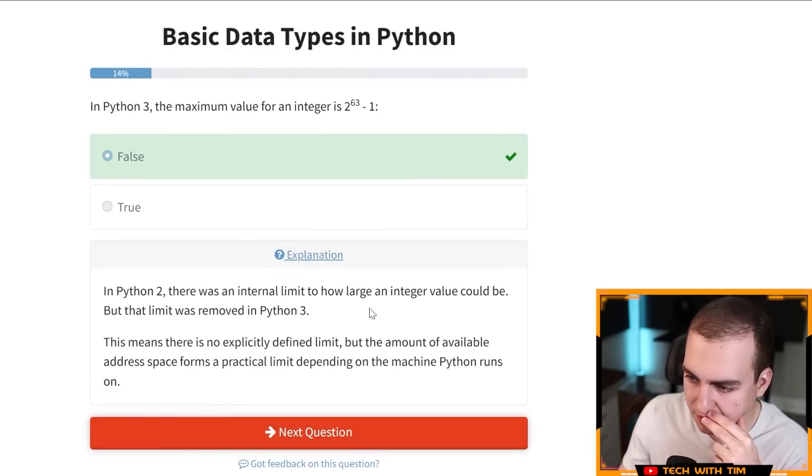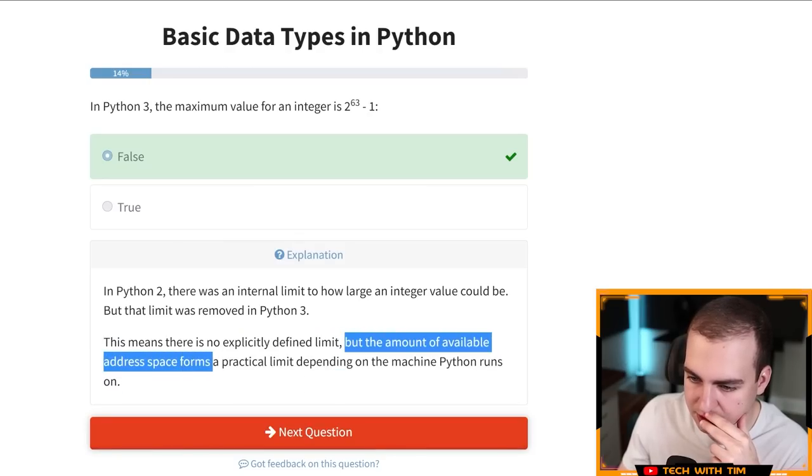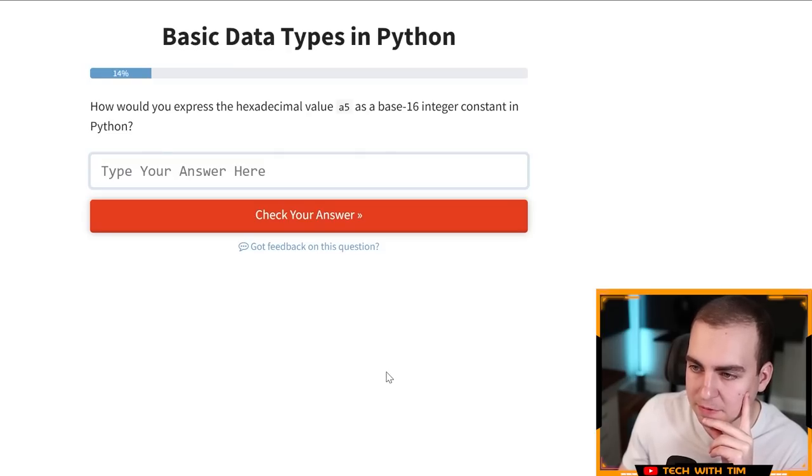So let's see what it says here. Limit was removed in Python three. It means there is no defined limit, but the amount of available address space on your machine. Okay.